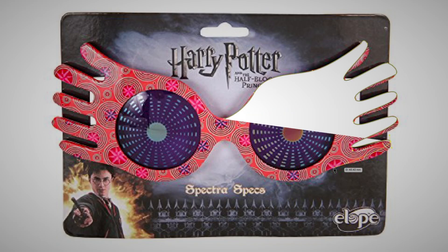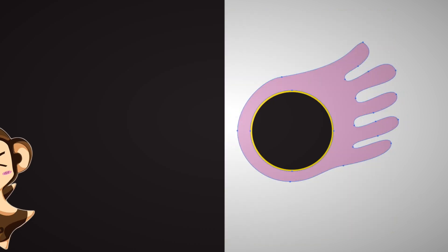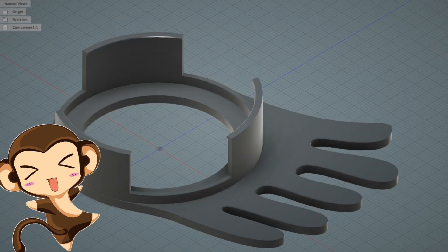Next comes the decoration to make it look like a true pair of spectra specs. I started off by finding a picture. I traced the outline and modeled the frame shape. It took a bit of trial and error and help from my dad when I got stuck.